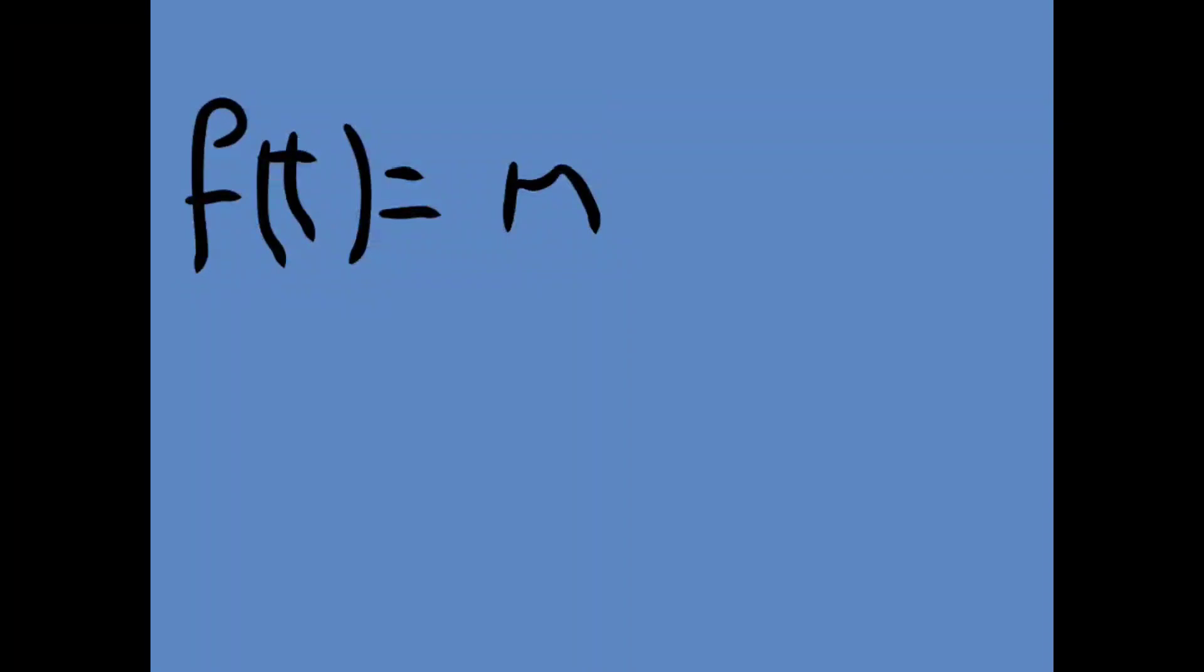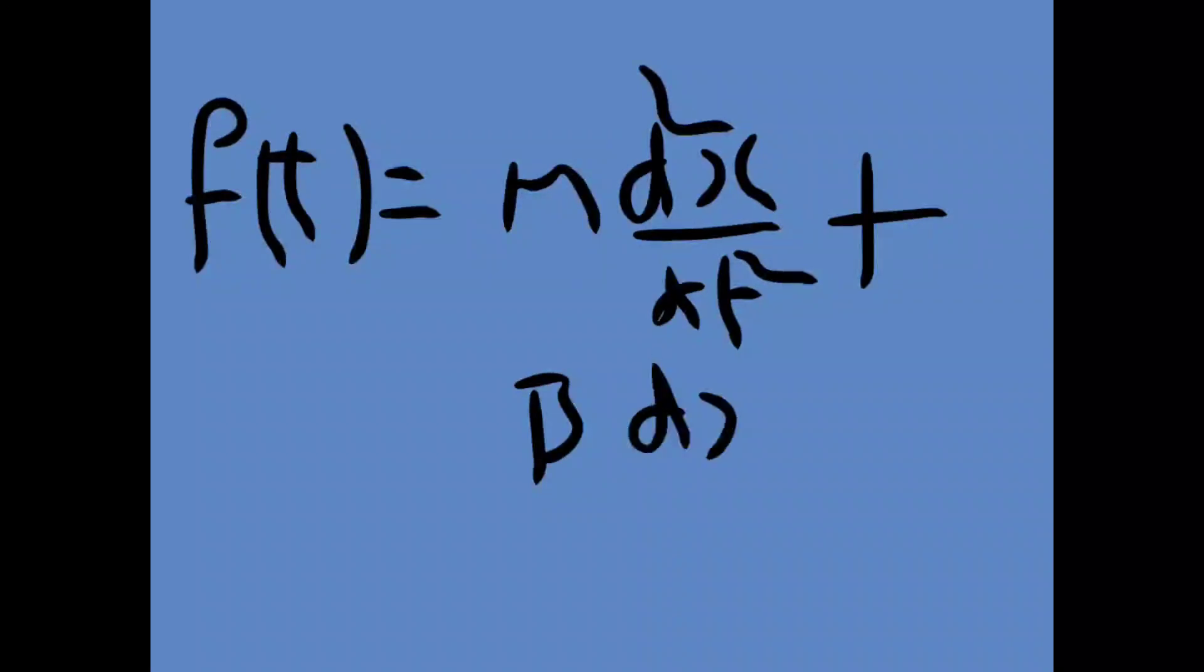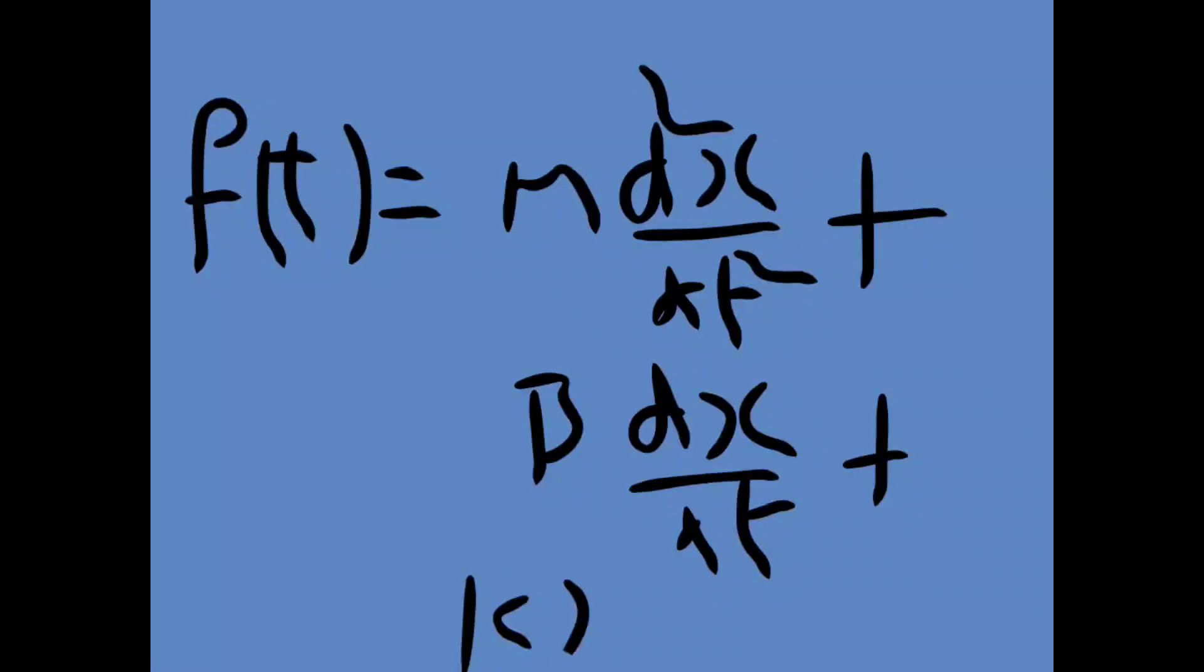F(t) equal to Fm, M into d²x(t)/dt² plus B into dx(t)/dt plus K into x(t).